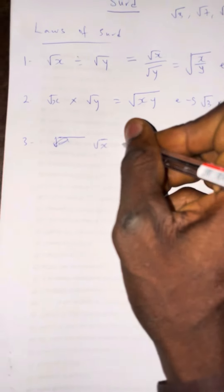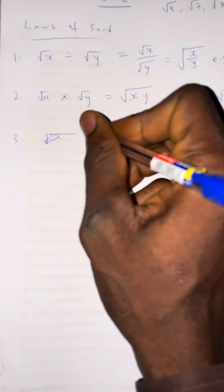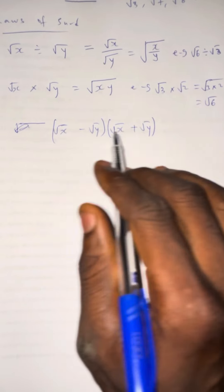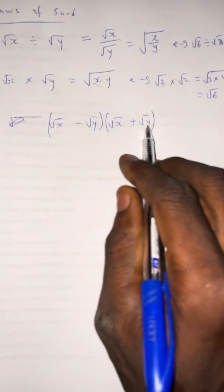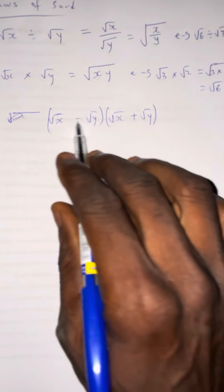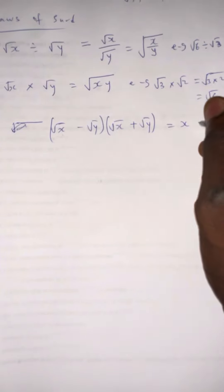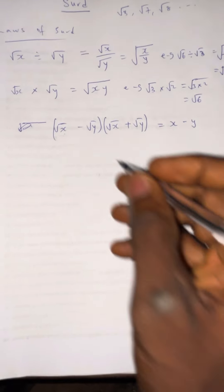Law number 3: if you have (root x minus root y) multiplied by (root x plus root y), you observe that the numbers under the roots are the same in both brackets — the only difference is the sign. So your answer will be the first number, x, minus the second number, y.